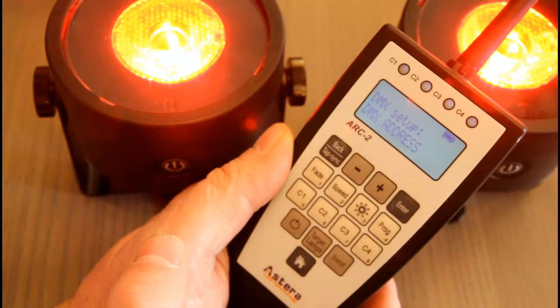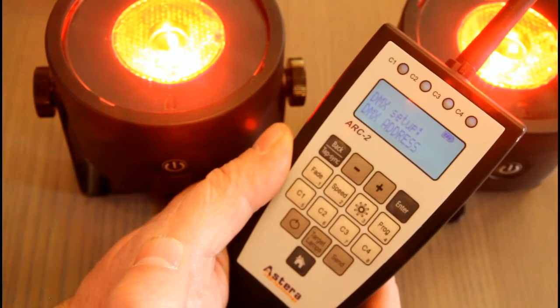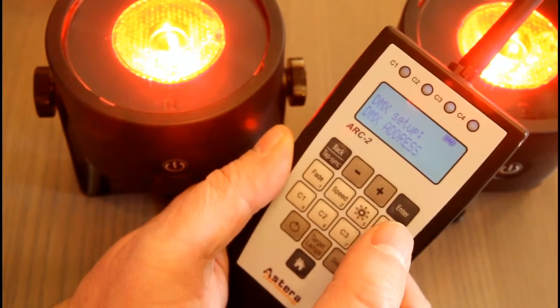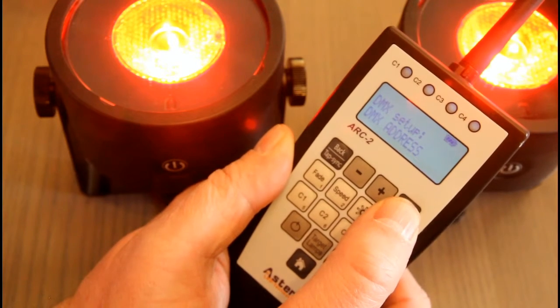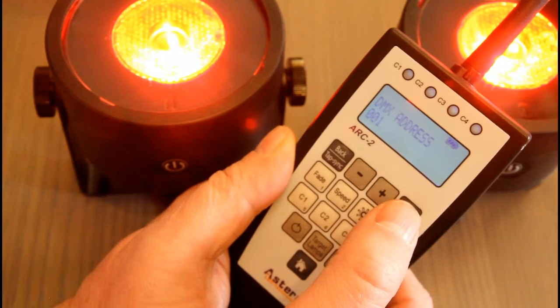Hit enter to get back into the DMX setup menu, and we see DMX address first. So the light on the left, I'm going to set with DMX address 1.